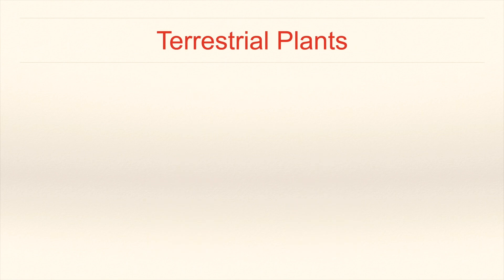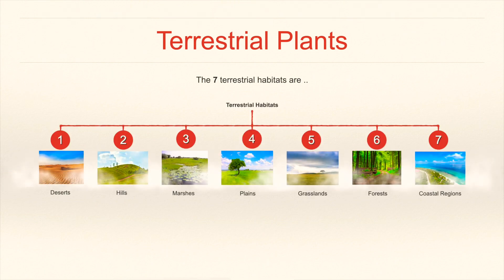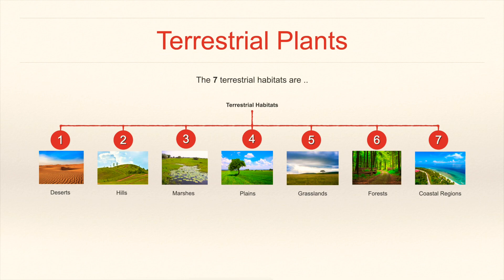Let's now learn about terrestrial plants. There are seven types of terrestrial habitats. They are deserts, hills, marshes, plains, grasslands, forests and coastal regions.